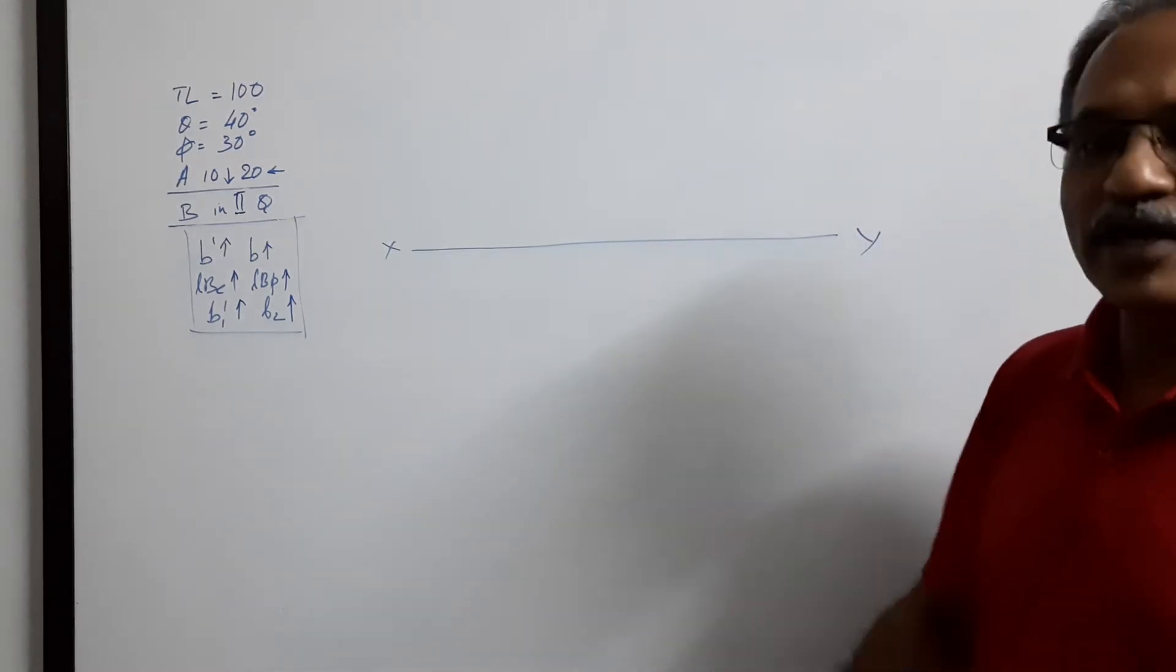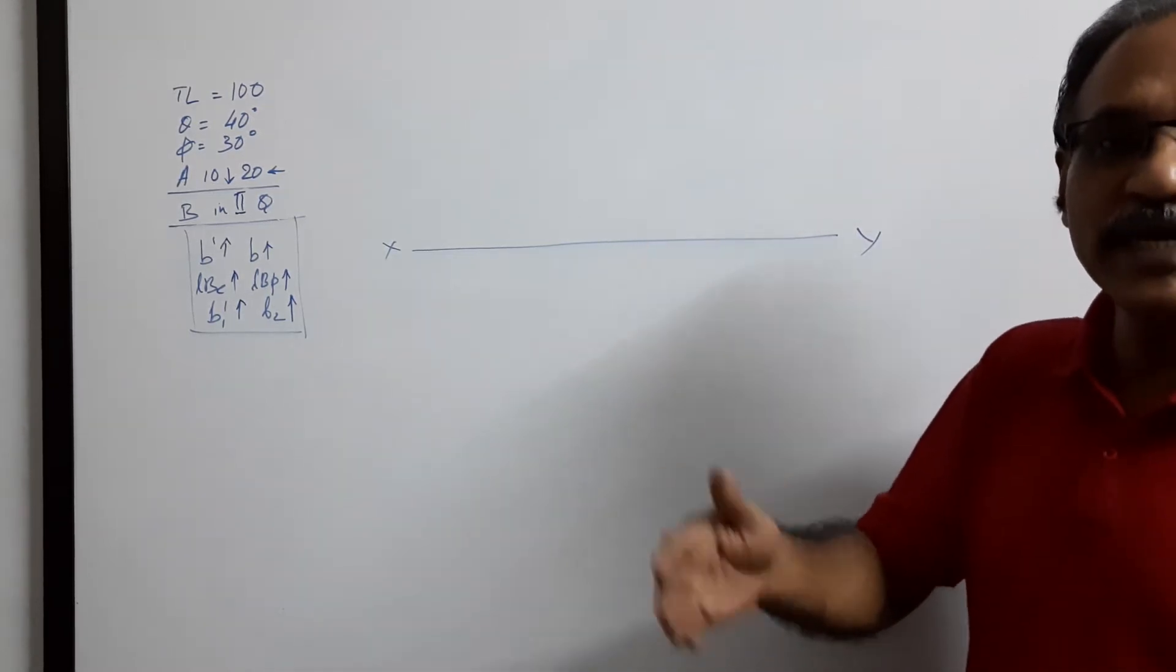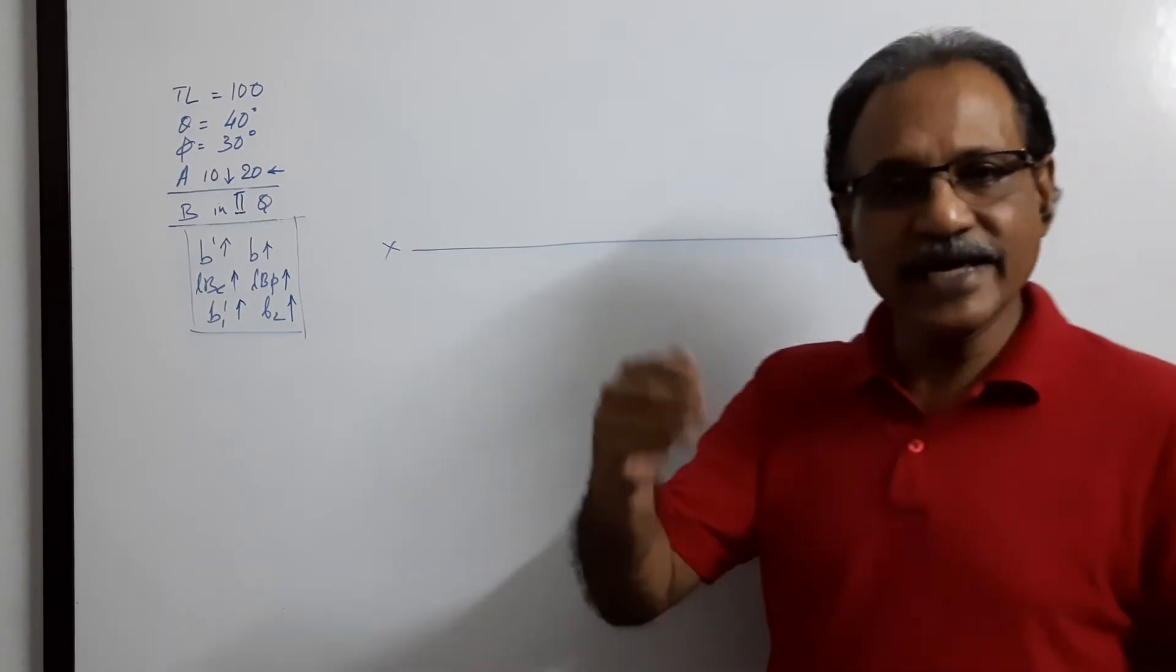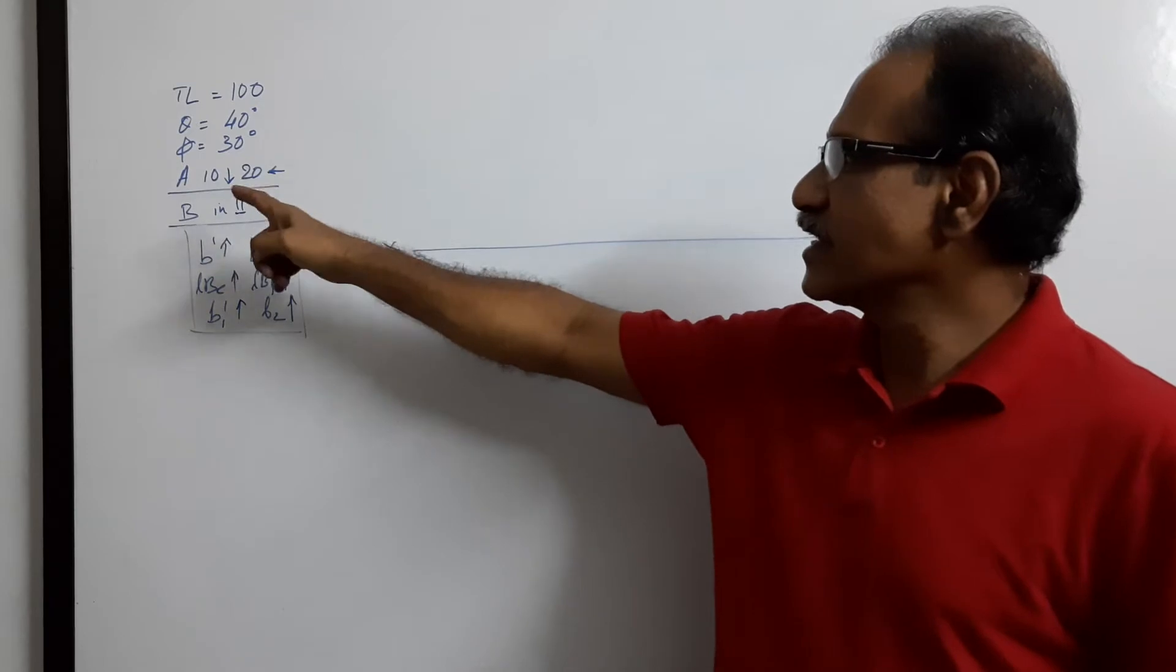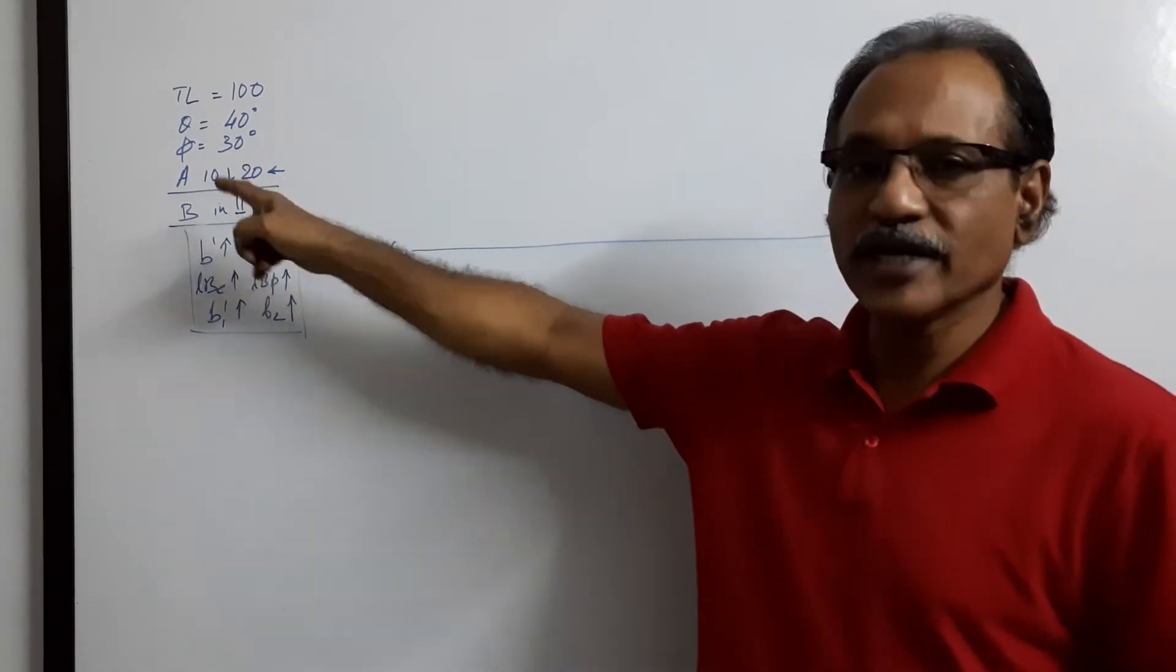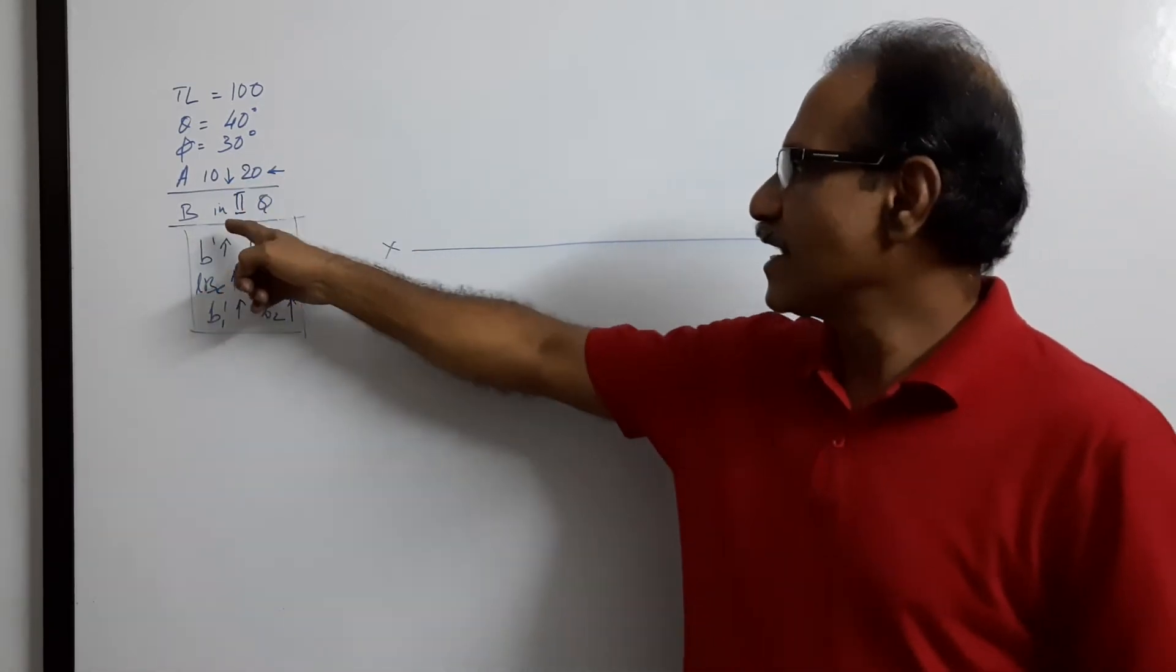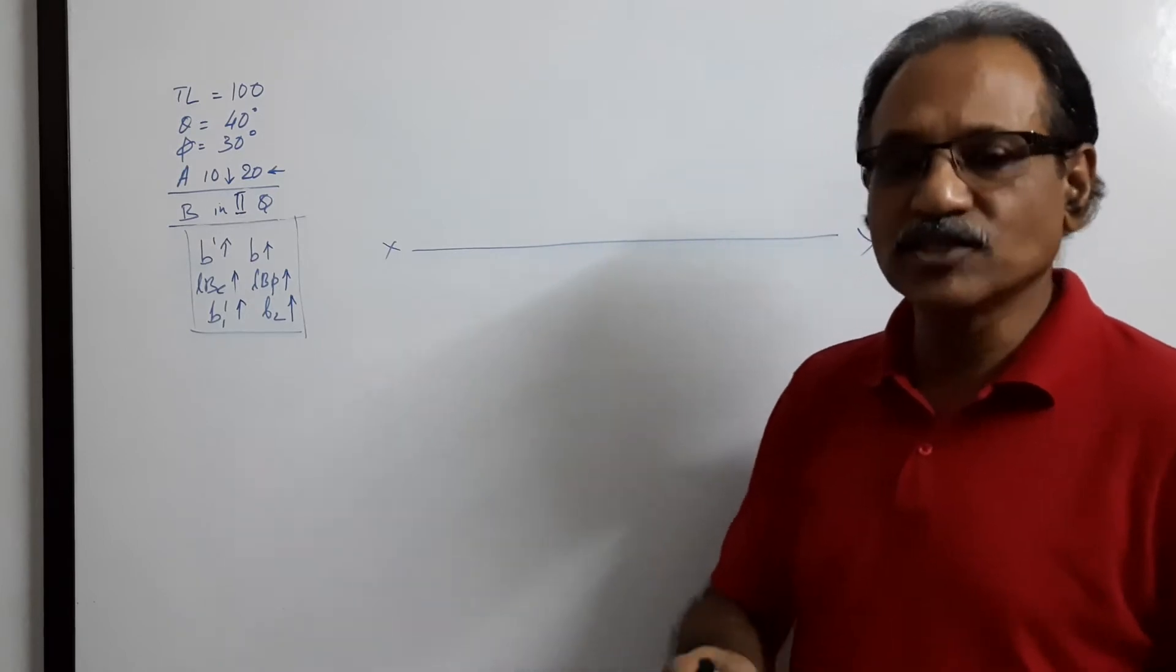In this problem, we are bringing end B in the second quadrant, keeping end A in the third quadrant. True length is 100, theta 40 degrees, phi 30 degrees. A is 10mm below HP and 20mm behind VP, third quadrant, and end B in second quadrant. Let's see what happens.